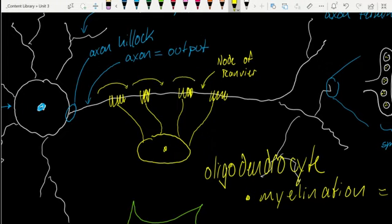And this is essentially jumping from node to node the action potential. And this saltatory conduction is what increases the speed up to 200-fold faster than an unmyelinated neuron.